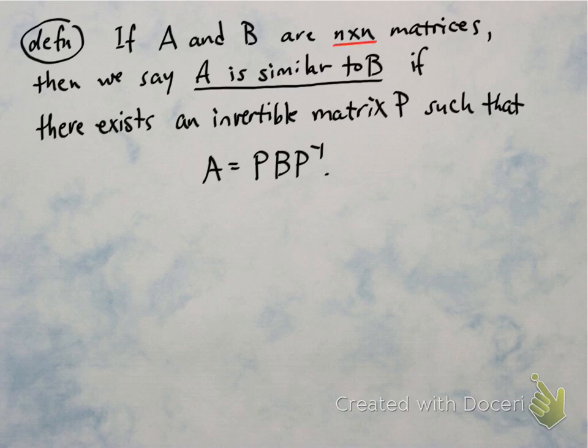So some things to notice here in the definition. We're only defining this property to talk about square matrices. Both have to be n by n, same size. And the definition is an existential statement. And so two matrices are similar if there exists this invertible matrix P that has a certain property.